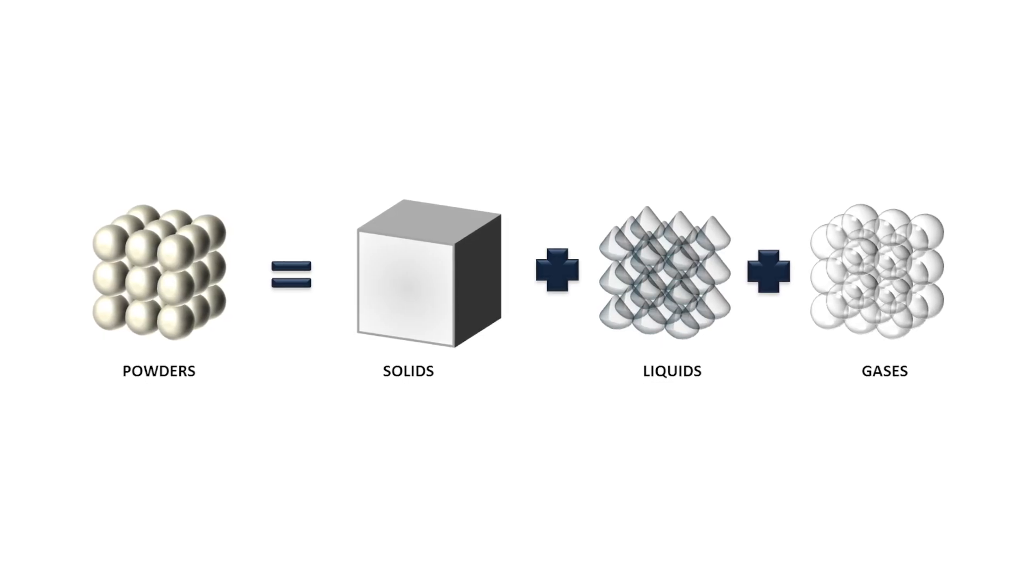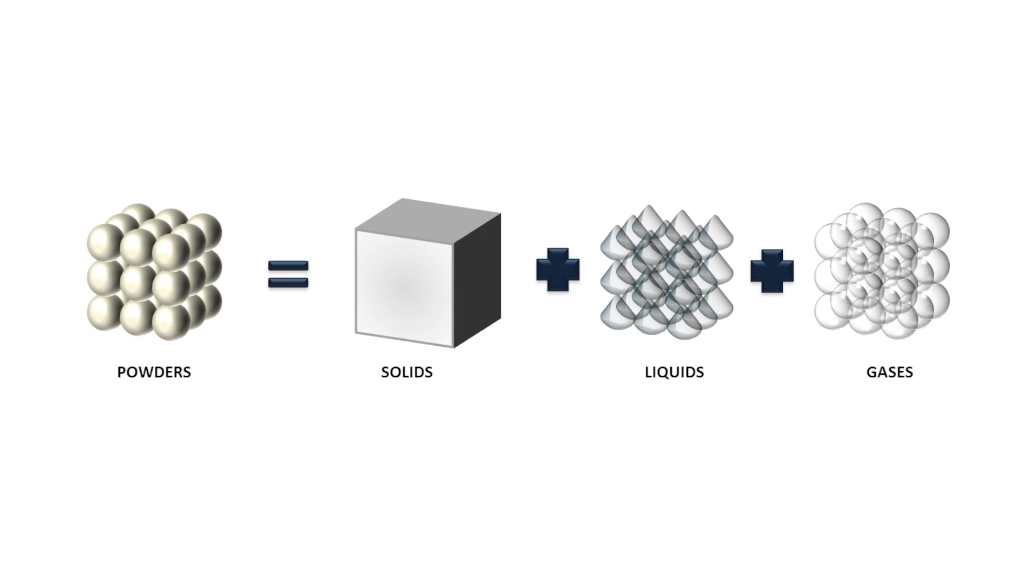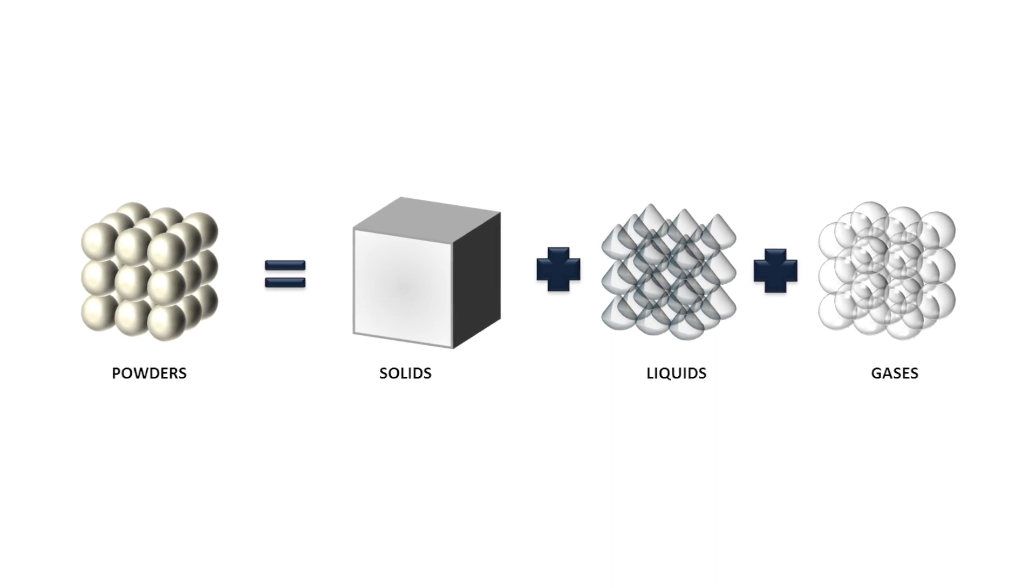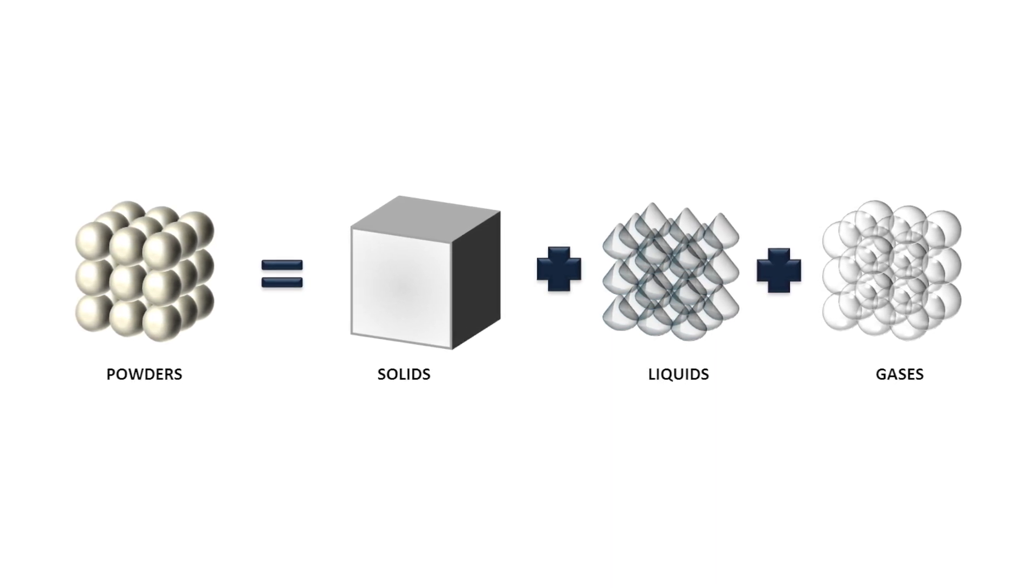Powders are complex materials though. They consist of three different phases: the solid component, which is the particle generally; they're surrounded by air as a gas; and there's often liquid on the surface of the particle or within the particle structure. The way these three phases interact really dictates the bulk powder properties.